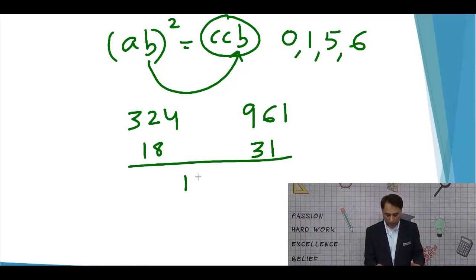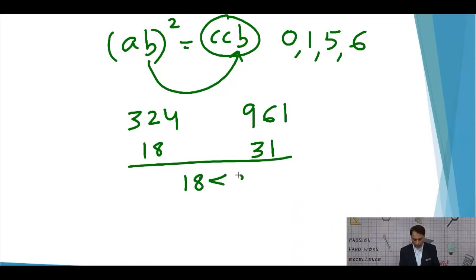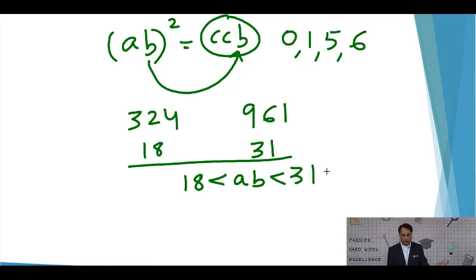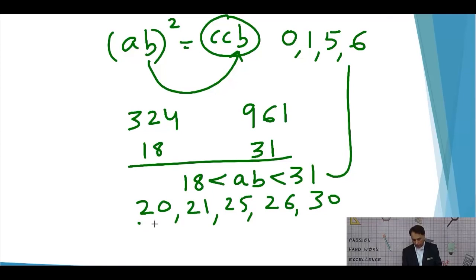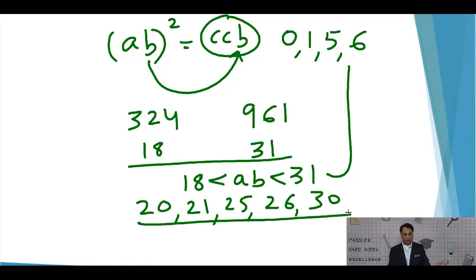AB is a number between 18 and 31. Combining this with the earlier finding that B must be 0, 1, 5, or 6, we can narrow down the possible values of AB.